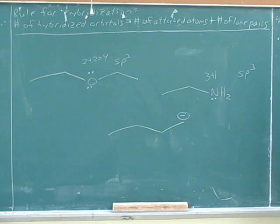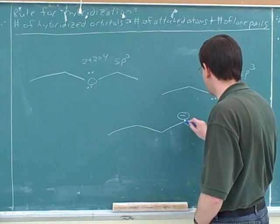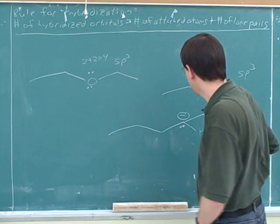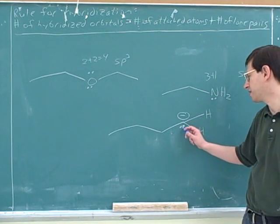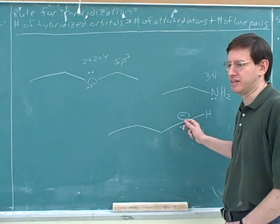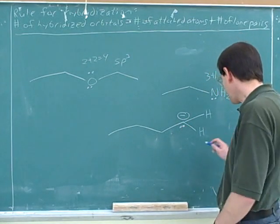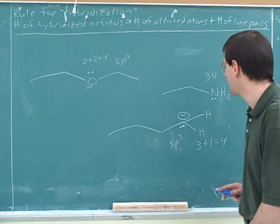What's the hybridization of this carbon? I think it would still be SP3 because it would have two attached hydrogens, one attached carbon, and one lone pair. It might help to draw in everything it's attached to — it has two hidden hydrogens and a lone pair. You could use your chemistry skills to see that a carbon with three bonds and one lone pair has a negative one formal charge — this is what's called a carbanion. We should have memorized that a carbanion has a lone pair. So there are three attached atoms and one lone pair, giving four hybridized orbitals: three p's and one s.